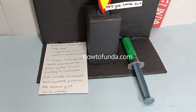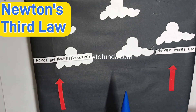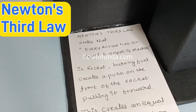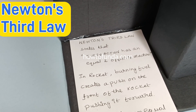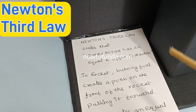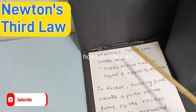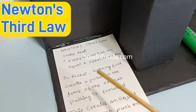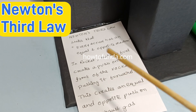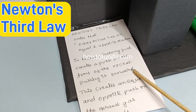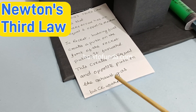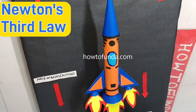Now I will explain Newton's third law. Newton's third law says that every action has an equal and opposite reaction. Using the rocket example: the burning fuel creates a push on the front of the rocket, pushing it forward. This creates an equal and opposite push of exhaust gases backward — that's how the rocket moves.